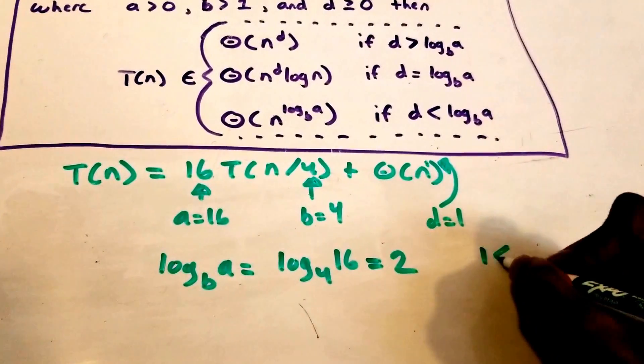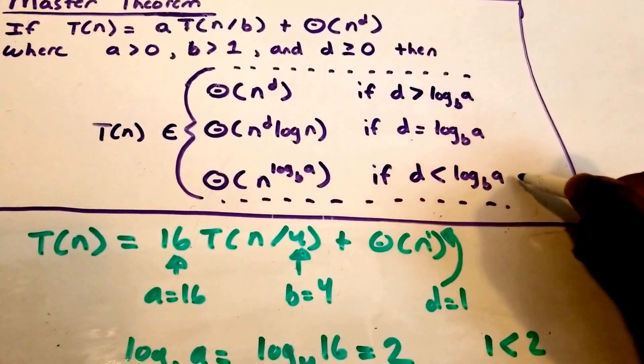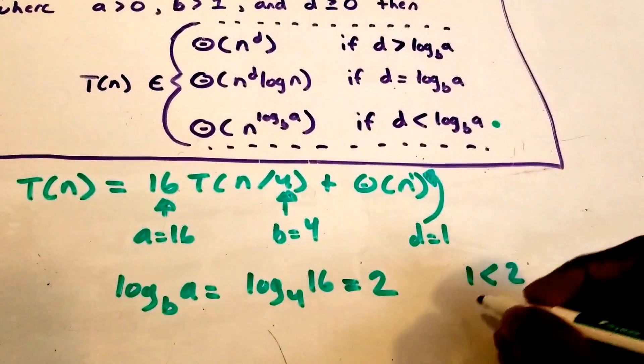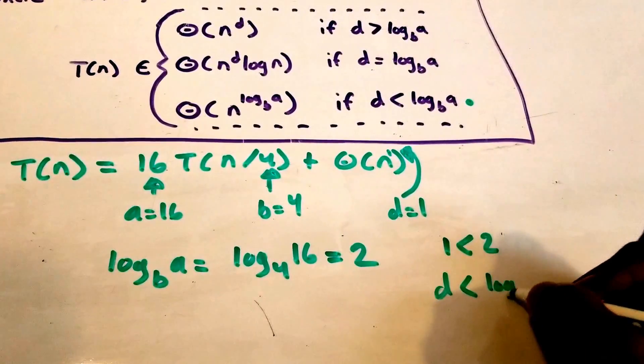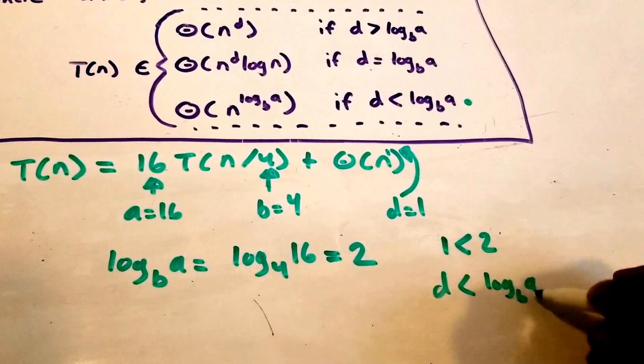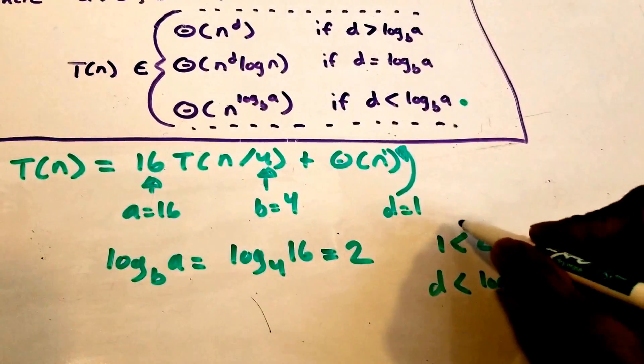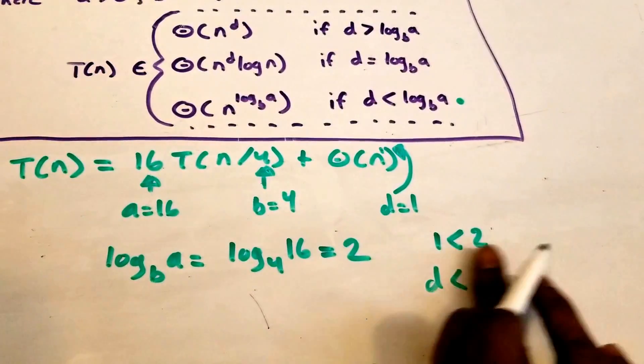So 1 is less than 2 so that goes with our third condition here or third case because d is less than log base b of a and log base b of a is 2 and d is 1. All right. So I'm going to just erase this here.